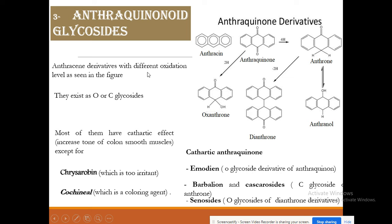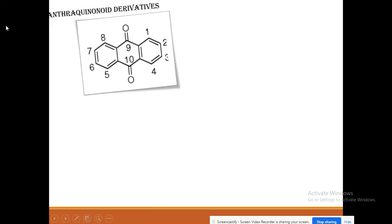The anthraquinone derivatives with cathartic effects include most of the group. Chrysarobin is the exception — it has irritant effects. Cochineal acts as a coloring agent. Overall, the anthraquinone derivatives are classed as stimulant laxatives.